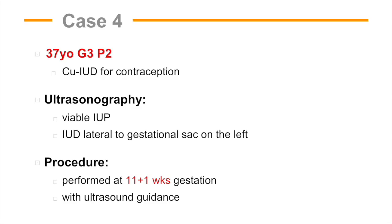Case 4 is a 37-year-old Gravida 3 Para 2 who had a copper IUD removed at 11 weeks and 1 day under ultrasound guidance. This case nicely depicts how the uterine cavity is entered slowly and carefully to avoid disrupting the gestational sac, which is now seen here. Minimal distension media is again used to create a track between the sac and the lateral uterine wall. The hysteroscope is angled up and over the gestational sac before returning to the track against the lateral uterine wall when the IUD is not seen.